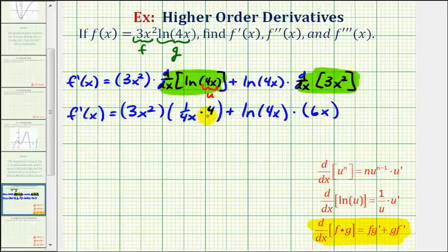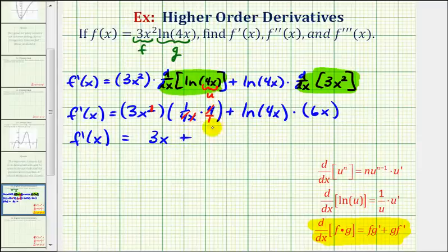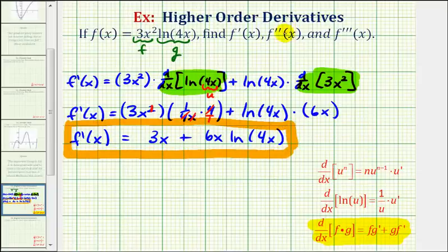Now let's simplify. Notice this is four over one, so four over four simplifies to one. We have three x squared times one over x, so one factor of x simplifies out — this simplifies to three x. So f prime of x equals three x plus six x natural log four x. We need to be careful here: we can't add the three x and the six x because the six x is attached to the natural log by multiplication. So this is our first derivative, and now to find the second derivative, we'll find the derivative of the first derivative.